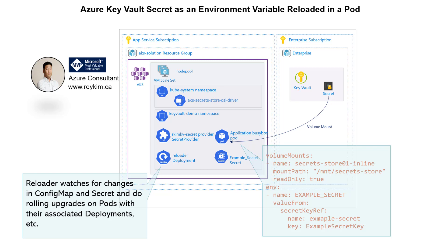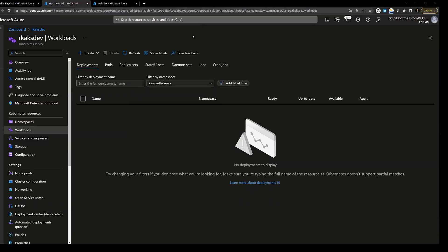To recap: how do we achieve a seamless update of the environment variable in your pod when someone updates the secret in Key Vault? Now I'd like to go through the implementation of configuring a Kubernetes pod using the Azure Key Vault provider for the Secret Store CSI driver.